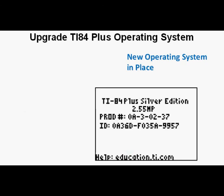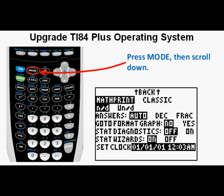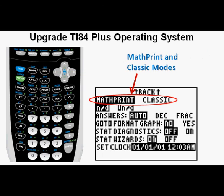We can now see the new operating system in place: version 2.55MP. To explore it, go to Mode and scroll down to the bottom of the Mode menu. At the top we see two modes available with the new operating system. MathPrint — which is currently selected — is the new mode. If we want, we can always go back to Classic mode, which is what we had before the upgrade.